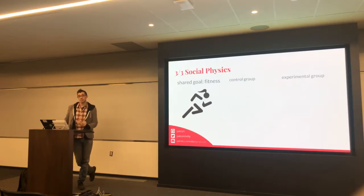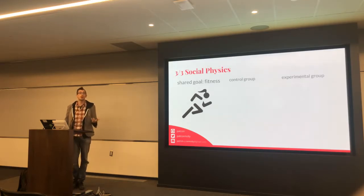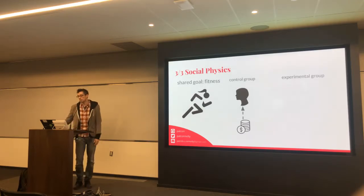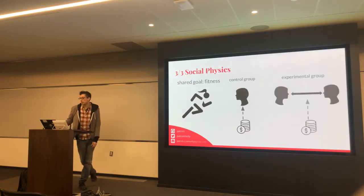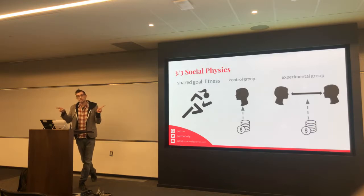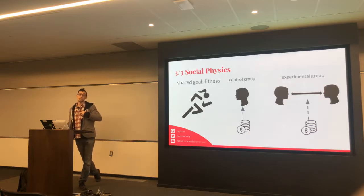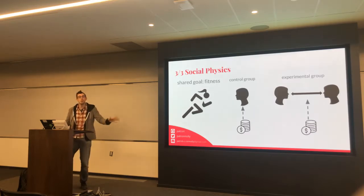One of the studies they did to understand this better looked at a goal that everyone was sharing — maybe to be healthier. They had a control group where they gave people an app and said: we're going to give you money any time you meet your day's fitness goal. And then they had an experimental group where they paired people up with friends. Whenever your friend meets their fitness goals, the app pays you, and whenever you meet your fitness goals, your friend gets paid. So there's a reciprocal thing, and they gave no other instructions.